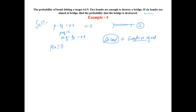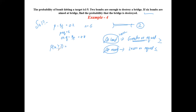When we have a greater than or equal sign, we always use the complement method with a lesser or equal sign. Since two bombs are enough to destroy the bridge — meaning at least two hits are needed — we write P(X ≥ 2), which covers X equals two, three, four, five, and six. We compute this as one minus P(X < 2).